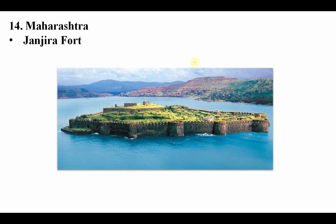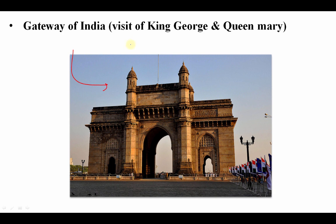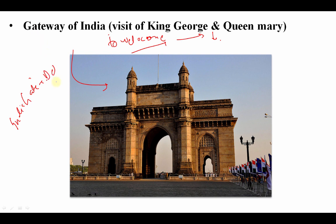Now Maharashtra. Janjira Fort is a place situated in the middle of a lake. Gateway of India is a very famous place — it was made to welcome King George and Queen Mary, the King and Queen of Britain at that time. You should not confuse Gateway of India with India Gate. India Gate is in New Delhi and was made in memory of World War I martyrs, while Gateway of India is in Mumbai and was made to welcome the King and Queen.